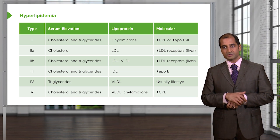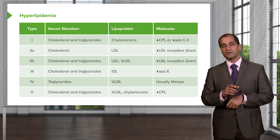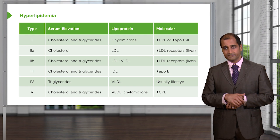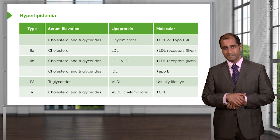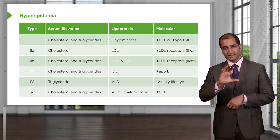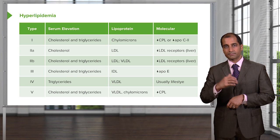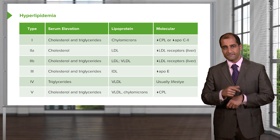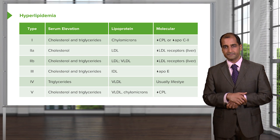Now, Type 3. Focus immediately on the molecular column — you'll see ApoE with three lines indicated. Type 3 is a problem with ApoE. This is not a problem with lipoprotein lipase; it's a problem with remnant removal. Hence it's sometimes called remnant removal disease, and another name for it is familial dysbetalipoproteinemia.